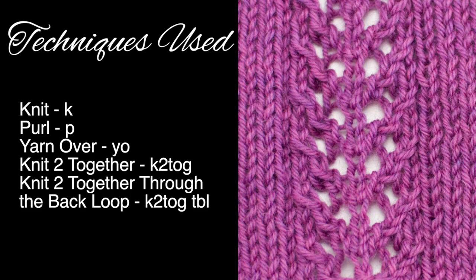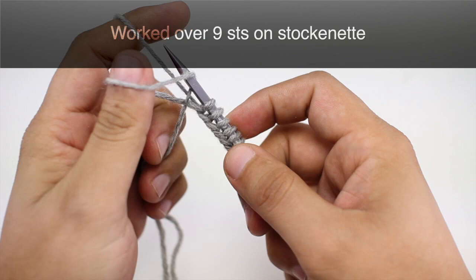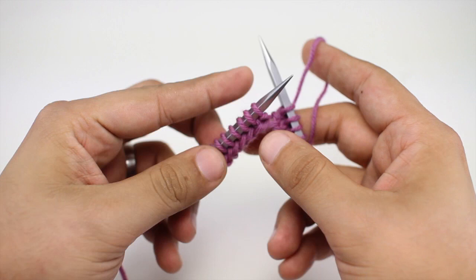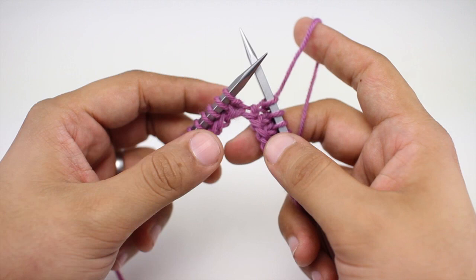This panel stitch is worked over nine stitches on a stockinette background. Now since this is a panel stitch that's worked over a stockinette background, I'm not going to include the instructions for the stockinette portion of this fabric, only the stitches that we are working to create the panel.